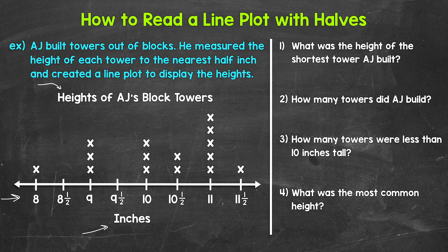Each X represents a tower. For example, if we look at 11 and a half, we have one X above that, meaning one tower was 11 and a half inches. Now let's jump into our questions, starting with number one: what was the height of the shortest tower AJ built? We need to look for the smallest number on our number line with at least one X above it. That's going to be eight — eight inches. That's the shortest tower AJ built.